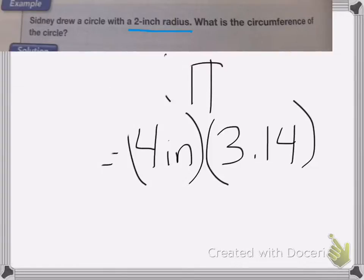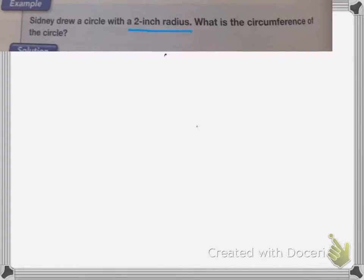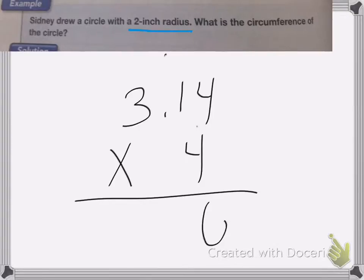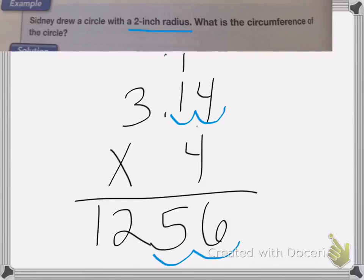Let's go ahead and write that as a multiplication problem. We're going to do 3.14 times 4. 4 times 4 is 16, carry my 1. Remember to ignore the decimal place. 4 times 1 is 4, plus 1 is 5. 4 times 3 is 12. Now count the decimal place, 1, 2, so we move it over 1, 2, and my answer is 12.56.